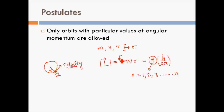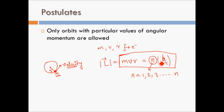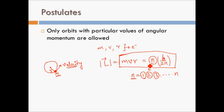This equation is very important: the angular momentum of an electron in Bohr's orbits is fixed and discrete — it cannot take any random value. The integer n also indicates the orbit number in which the electron is revolving. If n equals 1, the electron is in the first orbit; if n equals 2, it is in the second orbit, and so on.